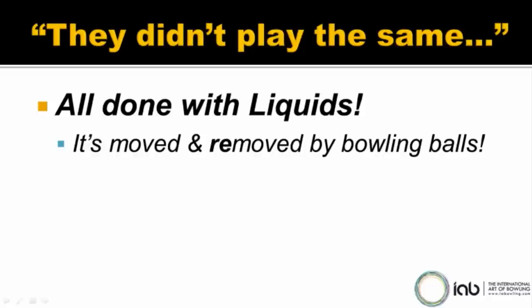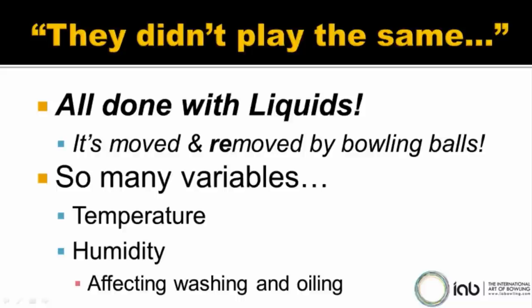There are so many variables regarding oil. Temperature and humidity are two big and obvious ones. Humidity in particular affects the efficiency of washing and oiling a bowling lane, and it affects the way the oil moves around on the lane. There are also surface variables and many other things that affect how a lane plays, but today we're going to talk about oil.